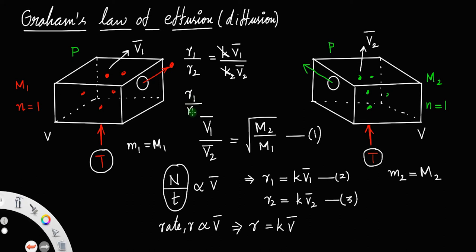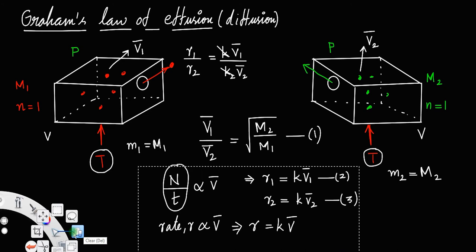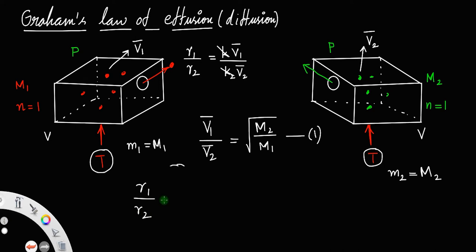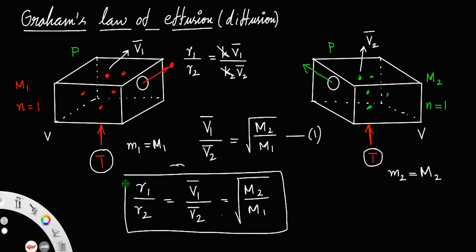Dividing equation 2 by equation 3, r1 by r2 equals k v1 bar by k v2 bar. Cancelling k, r1 by r2 equals v1 bar by v2 bar, which we already found equals root of m2 by m1. So this is Graham's law of diffusion: rate is inversely proportional to molecular mass. Greater the molecular mass, lesser will be the rate of diffusion.